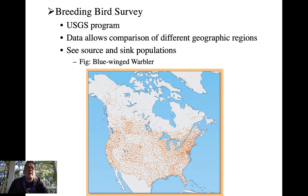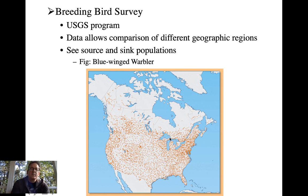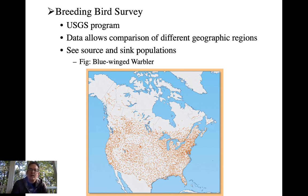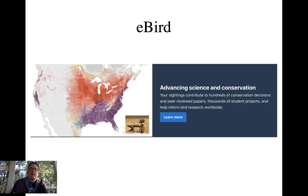The Christmas Bird Count gives us an estimate of populations and communities of birds in winter. There is also a Breeding Bird Survey run by the USGS that does something similar in the breeding season — you drive a transect down some country roads, stop occasionally, and listen and look for all the birds along that road sign. It's a standardized method allowing comparison of different geographic regions, providing a coarse representation of what breeding birds are in different parts of the country and showing where population trends can be seen — for example, blue-winged warblers showing increases or decreases.